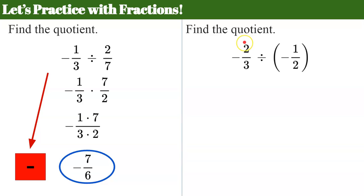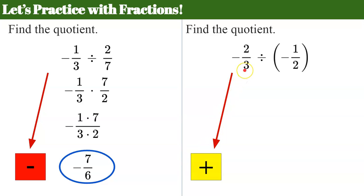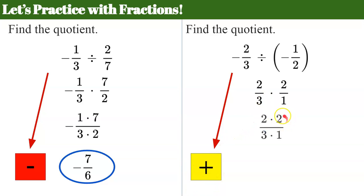Let's try the second one. I'm going to make my plan. I have a negative divided by a negative — same sign, both negative — my quotient is going to be positive. I'm going to keep two-thirds and multiply by the reciprocal. Notice I dropped the negative signs because I've already noted my quotient is going to be positive. Multiply our numerators, multiply our denominators: two times two is four, over three times one is three. My quotient is positive four-thirds.